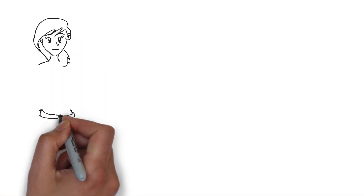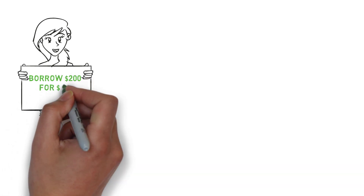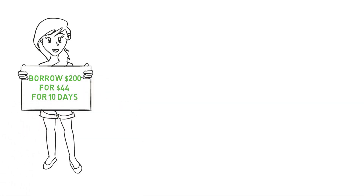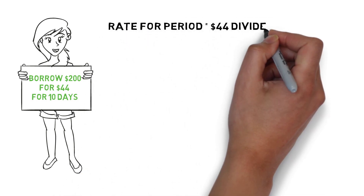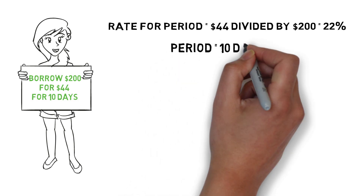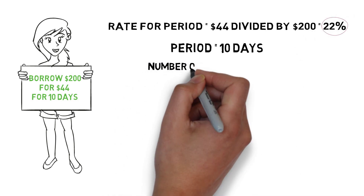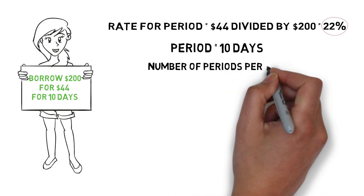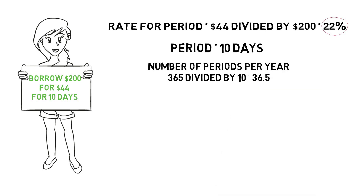Let's see another example. Let's say you were borrowing $200 with a cost of borrowing of $44 and you're only borrowing for 10 days. The rate for the period is $44 divided by $200, or 22%. The period is 10 days. To figure out the simple annual percentage rate, we need to multiply 22% per 10 days by the number of 10-day periods in a year, which is given by 365 days divided by 10 days, or 36.5.